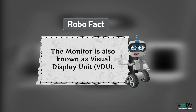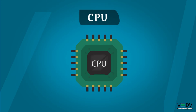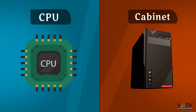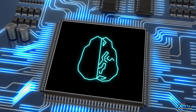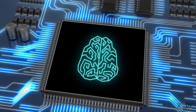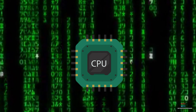CPU: The CPU is a small part of the computer present inside the CPU box, or cabinet. It is called the brain of the computer. CPU does calculations very fast.